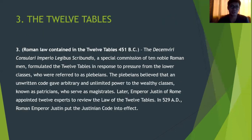Third, we have the Twelve Tables, formulated by ten noble Roman men. It was created as a response to pressure to control the lower class, referred to as the plebeians. Later, Emperor Justinian of Rome appointed twelve experts to review the laws of the Twelve Tables, and it took effect in 529 AD, later known as the Justinian Code.